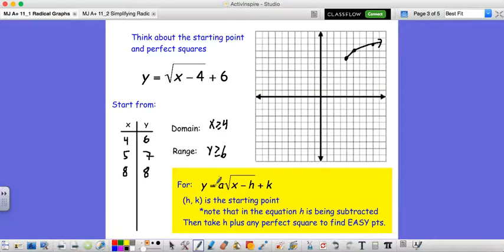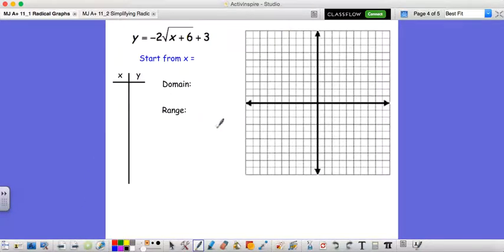So here we have the general form of our radical equations. y equals a times the square root of x minus h plus k. And if you ever have a square root equation, you'll always know that (h, k) is the starting point. Notice, (4, 6) is our starting point. h in this case was 4, k in this case was 6. So it's a nice little shortcut for us. And then just to note that h is being subtracted. So then you take h plus any perfect square to find some easy points, which is effectively what we did here.